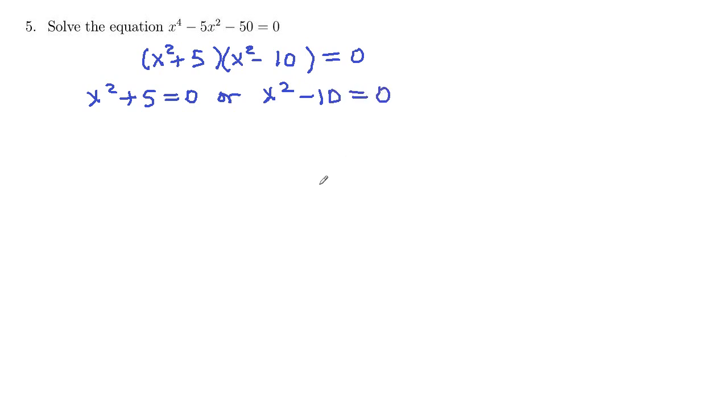Either one piece is 0 or the other is. Here we can subtract 5 on both sides, so that 5 will come over as negative. So x squared equals negative 5.